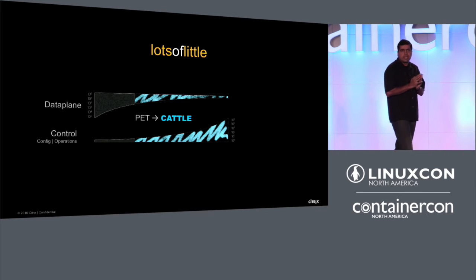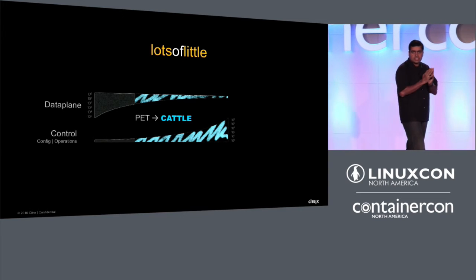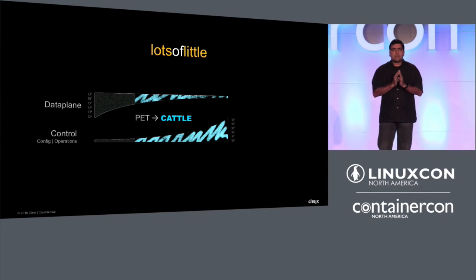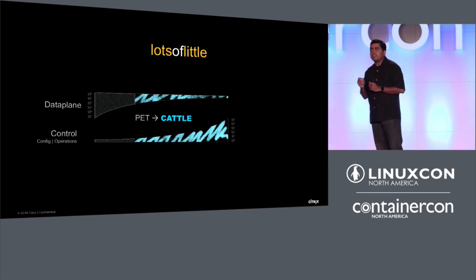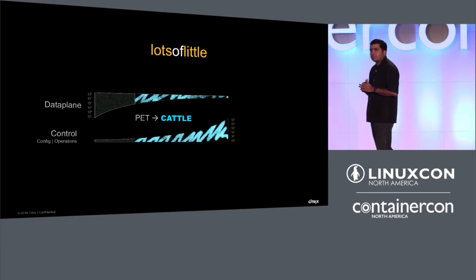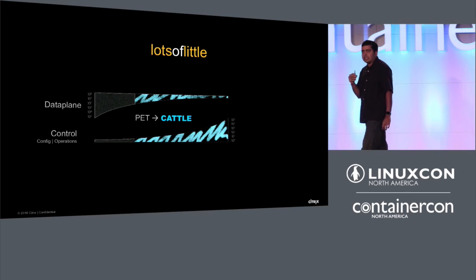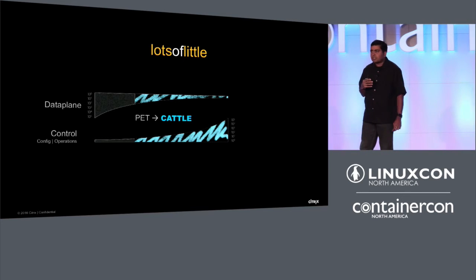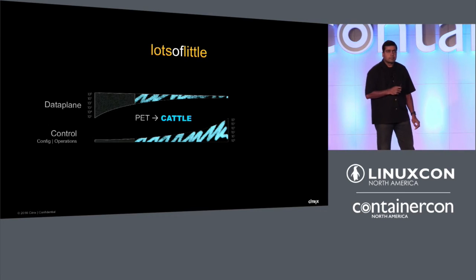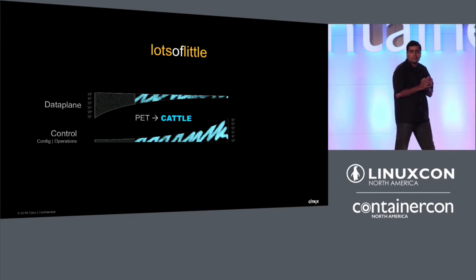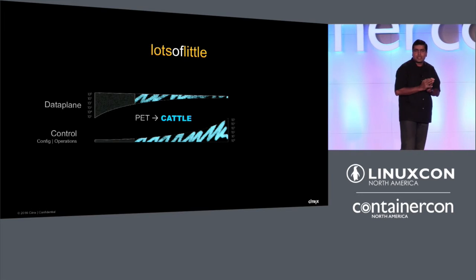You've heard this applied to compute in the past. This is the idea that pets are individually named and individually cared for, while cattle have serial numbers. And if your cattle fall sick, you don't nurture them back to health — you shoot them.